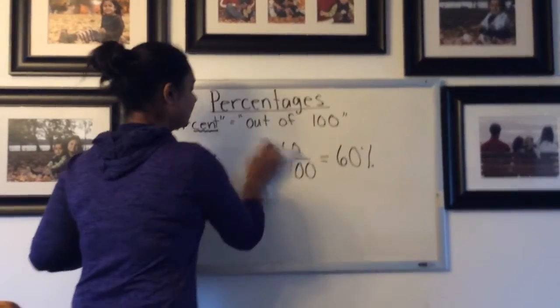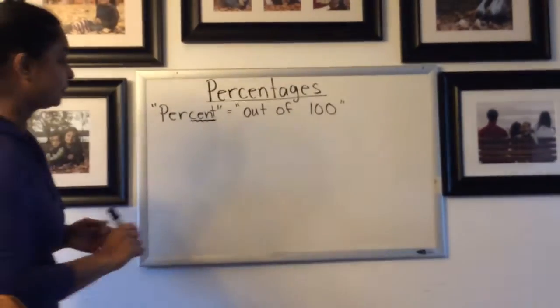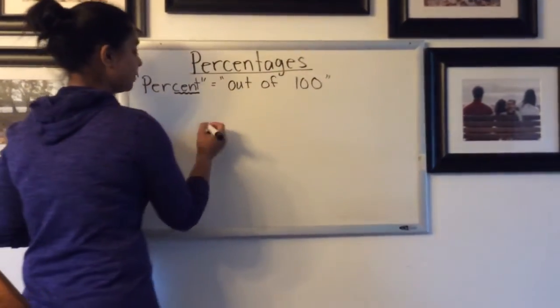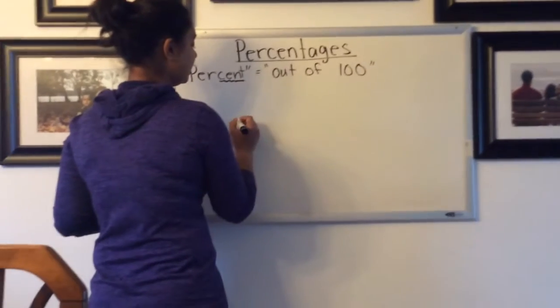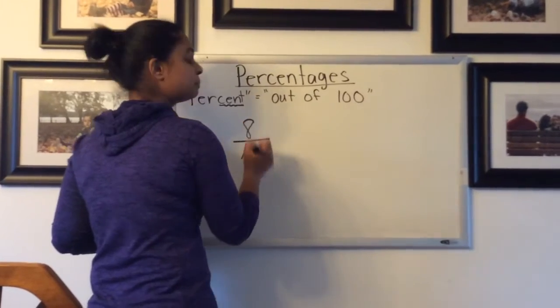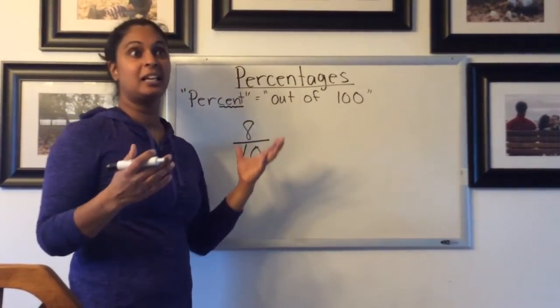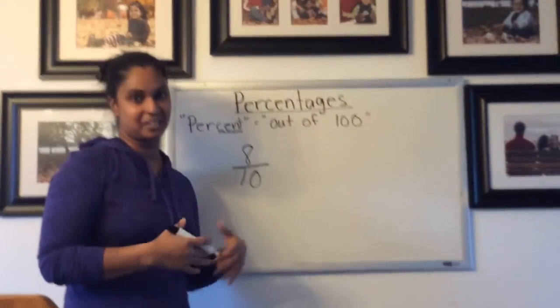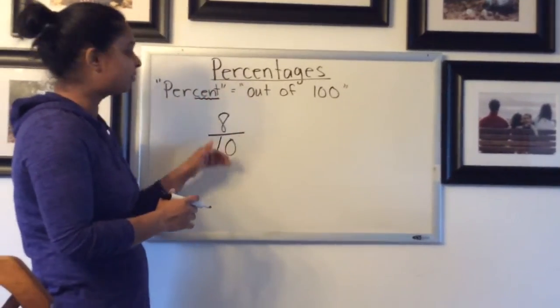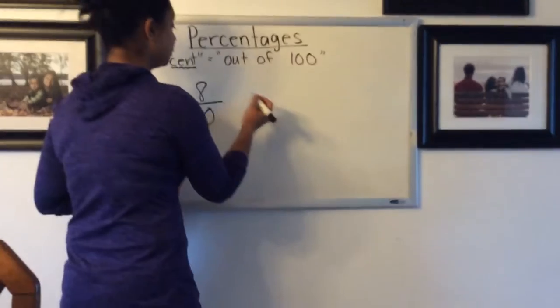Anytime you see a denominator that can be turned into 100, let's do another example. Let's say we have a denominator of 10, and let's pretend this is a mark on a test. That's a really common place where you would see percentages. As a student, your teachers would convert any marks you have in fraction form into percent to give you a mark for your report card.